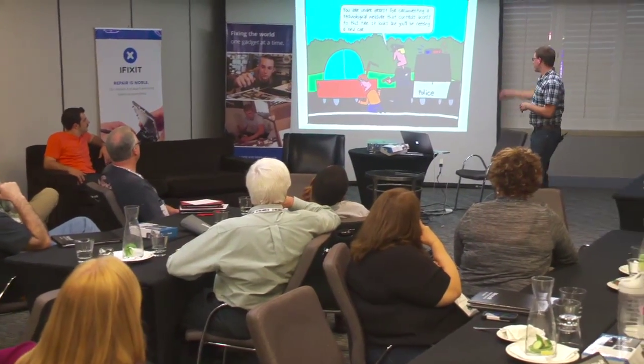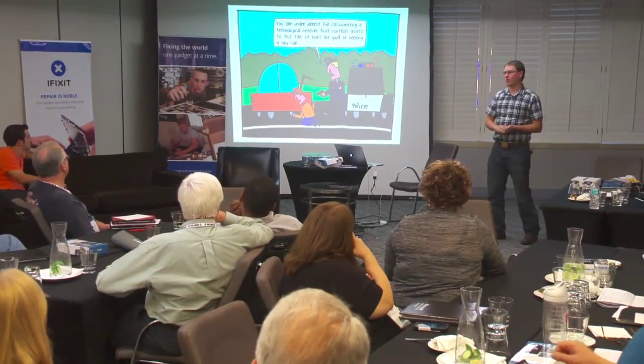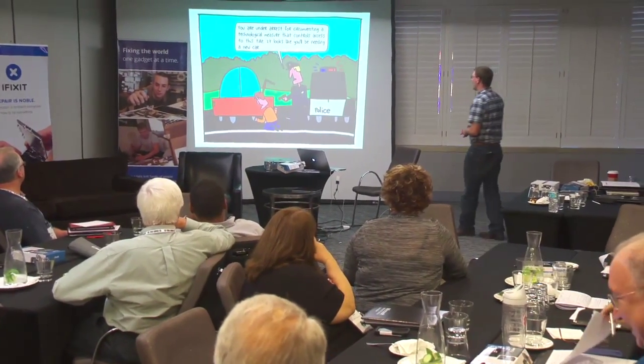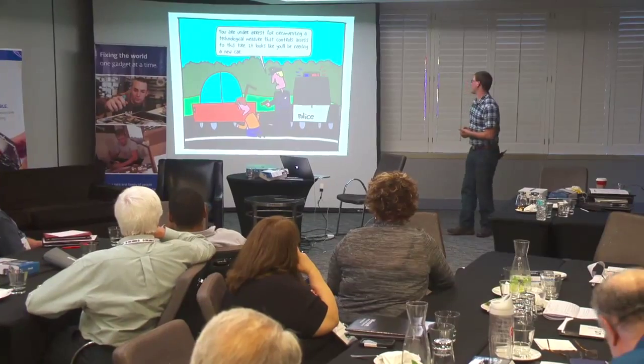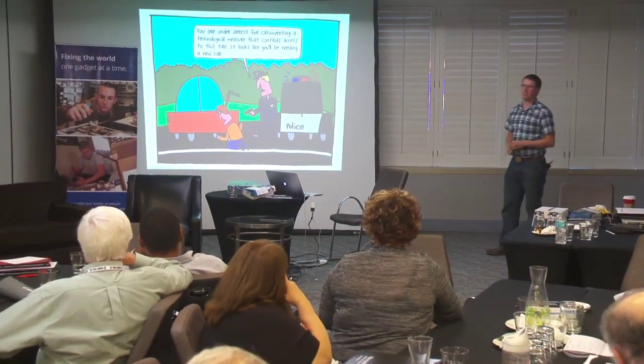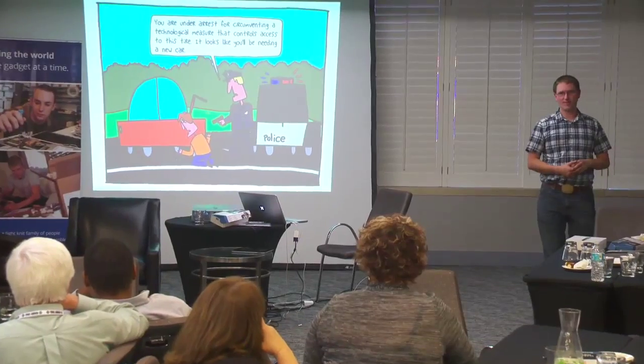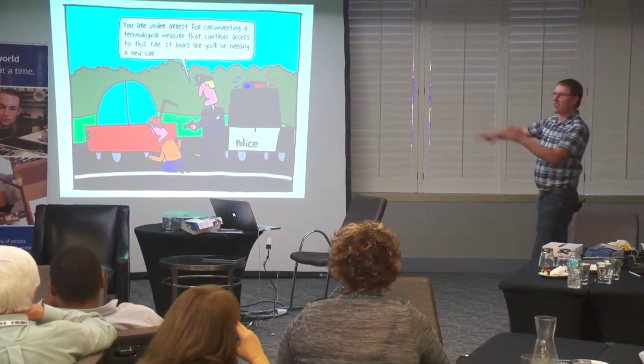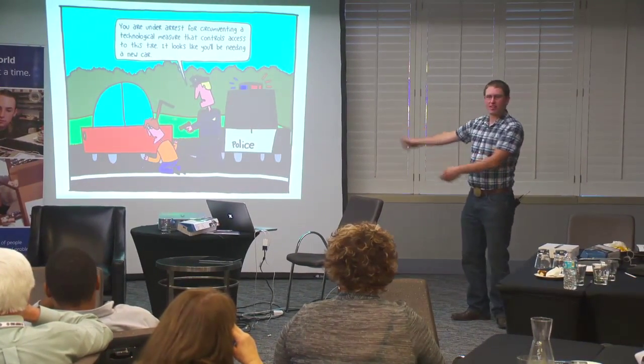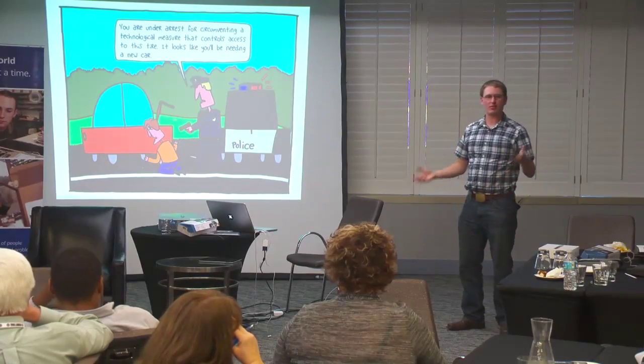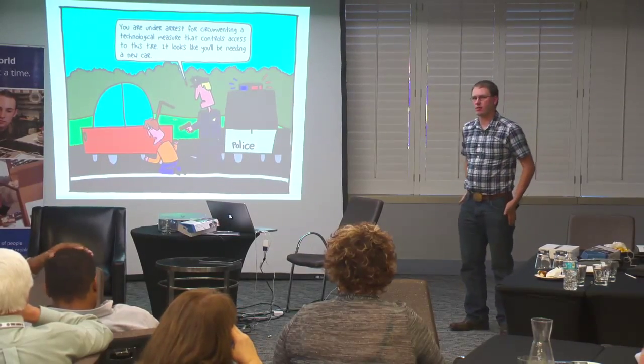So I will leave you with this cartoon. This ran on an article I wrote for Wired a few months ago. You are under arrest for circumventing a technological measure that controls access to this tire. It looks like you're going to be needing a new car. Everyone understands this in terms of cars. It's up to all of us to make everybody understand that those are the sorts of issues that we're facing with electronics.